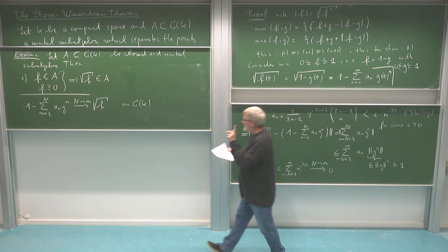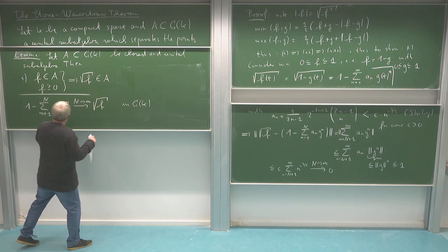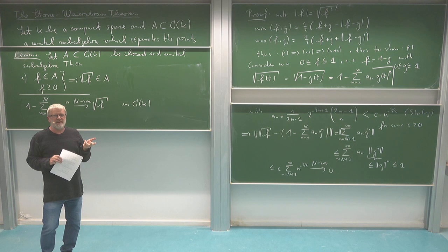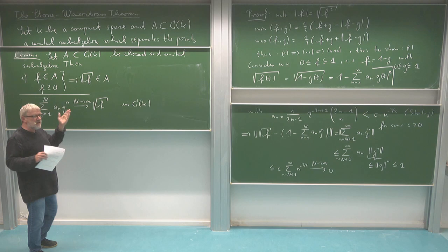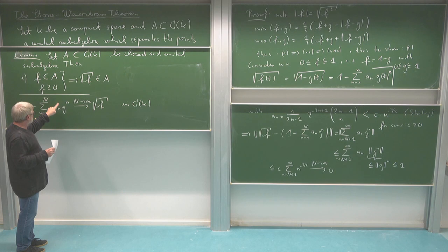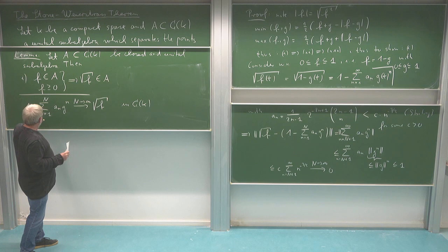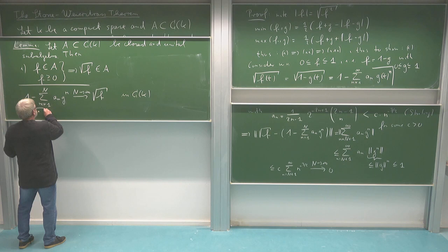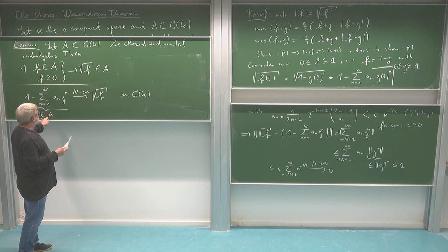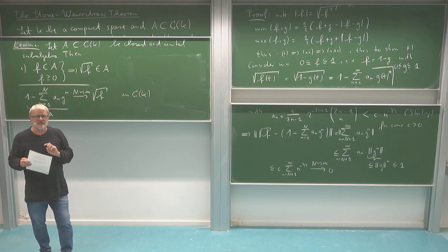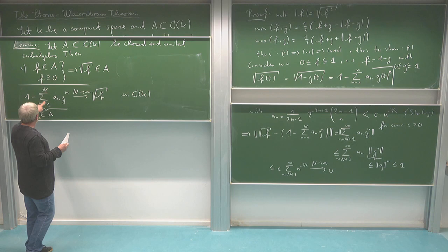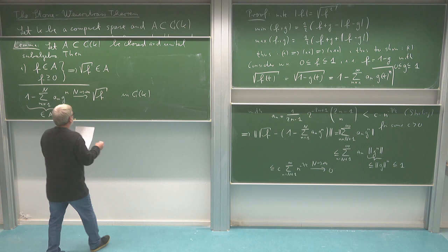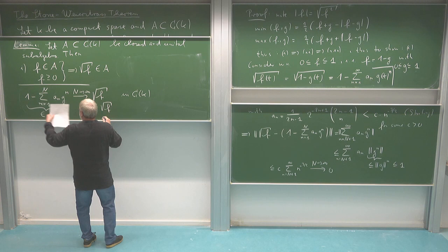So this tells me I have uniform convergence of the partial sums to √F. But these partial sums — namely, 1 minus the sum from n=1 to N of aₙ · Gⁿ — are using just the unital algebra structure of A. If G is in A, then Gⁿ is in A by multiplying within A. I can multiply by constants, and the constant function one is also there. So for each fixed N, this partial sum is in A. These elements converge to √F as N → ∞, and A is closed by assumption, so the limit must also be in A. Therefore √F is in A.